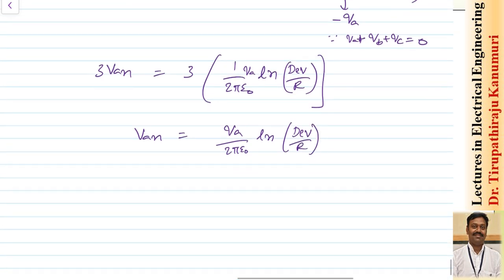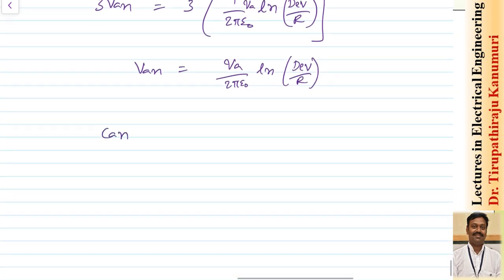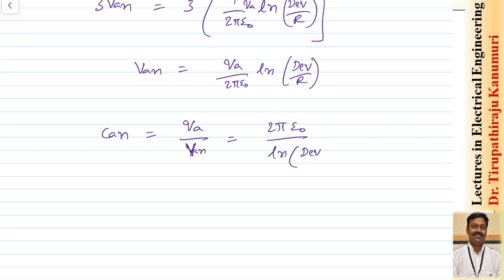From this, the capacitance between conductor A and neutral is C_AN = Q_A / V_AN = 2π ε₀ / ln(D_eq / r). The units are farads per meter, since Q is charge per unit length.